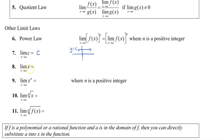Law number eight: the limit of x as x approaches a. If you think about what y equals x looks like, it's a diagonal line through the origin, with points 1,1 and 2,2 and 3,3, and so on. So as x approaches 1, the y value is 1; as x approaches 2, y is 2. The limit of x as x approaches a is equal to a.